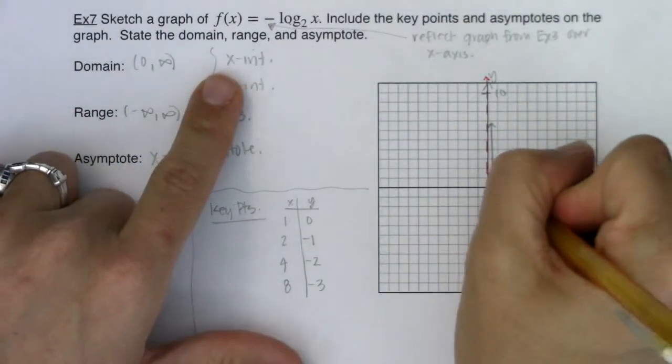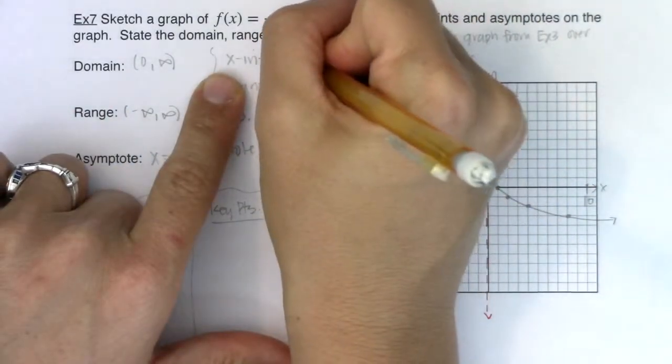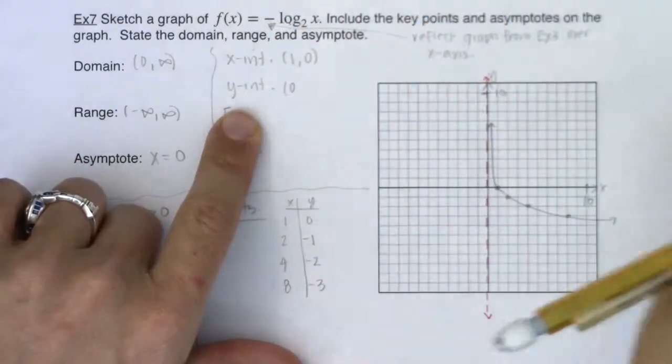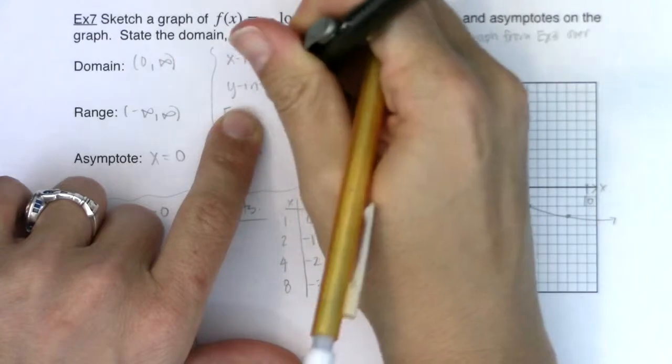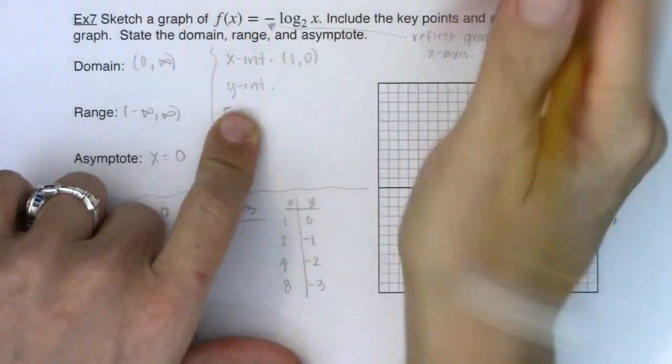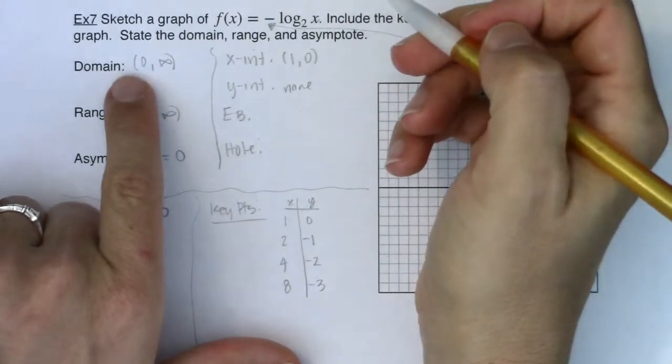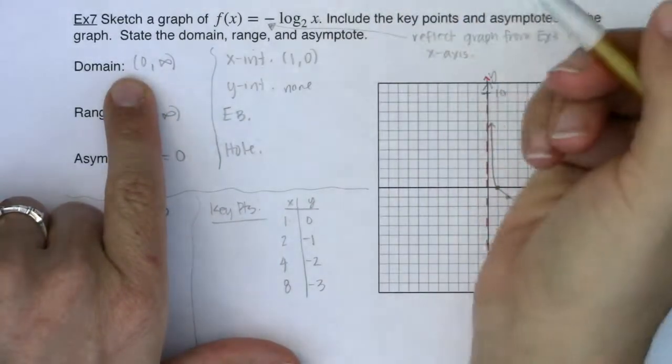So for our x-intercept I found it. My argument was one at one. I had no y-intercept. Should we write none or DNE. I had no y-intercept because zero is not in my domain. I'm not allowed to plug zero into this function.